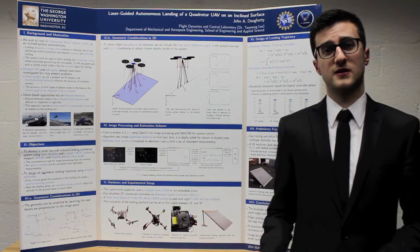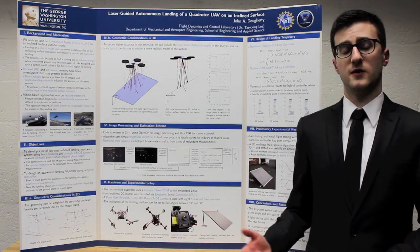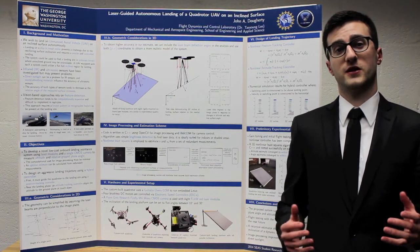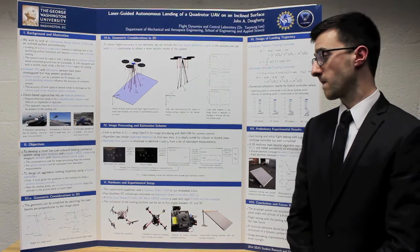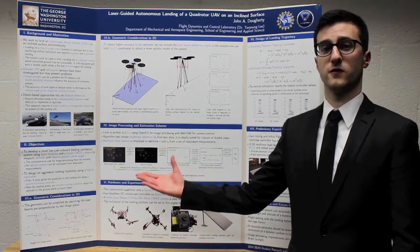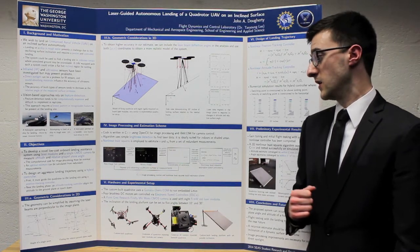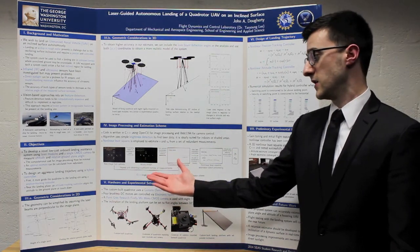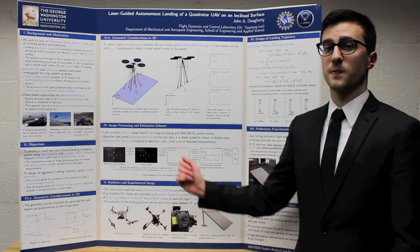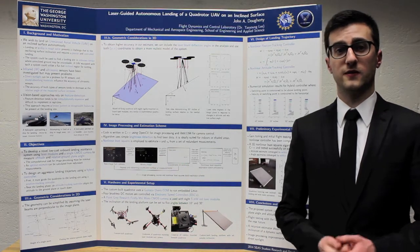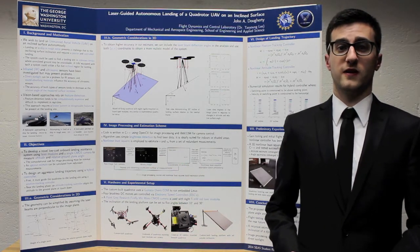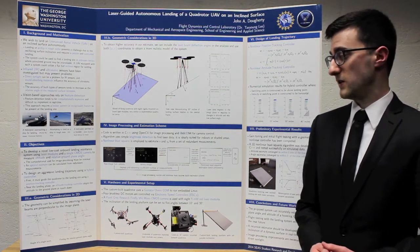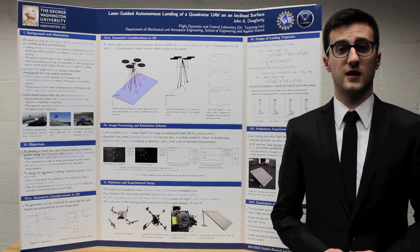We need a way to extract image coordinates from the raw image from our onboard camera. We use a straightforward image processing scheme that thresholds a raw image based on pixel brightness to produce a binary image. We then search this binary image for contours, find the coordinates of their centroids, and treat these as the coordinates of the laser dots in the image plane.